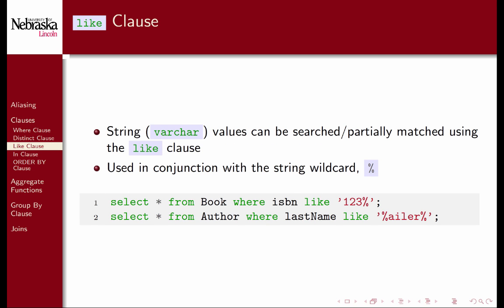You can partially search varchar values using the like clause. This is usually used in conjunction with the string wildcard which is the percent sign. For example, we can select all book records whose ISBN begins with 123. The wildcard will match any string value including the empty string. Thus any book that has ISBN 123 or 123 followed by any characters would be included in this query. You can use more than one wildcard when matching strings. The second example would match any string containing ailer with any characters proceeding or succeeding it.